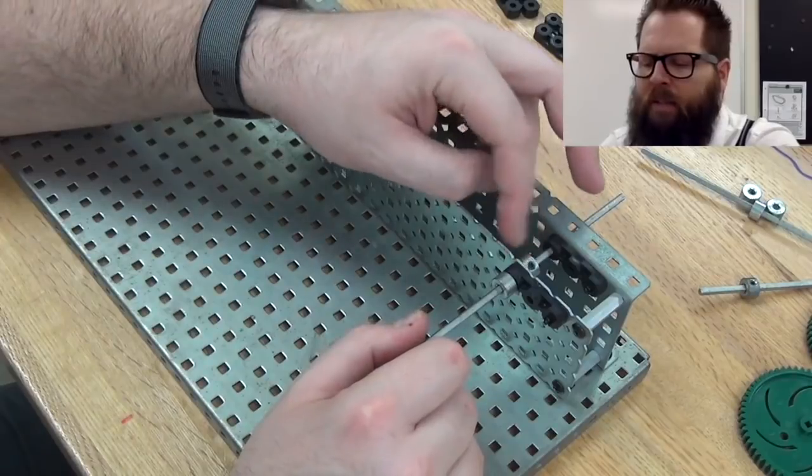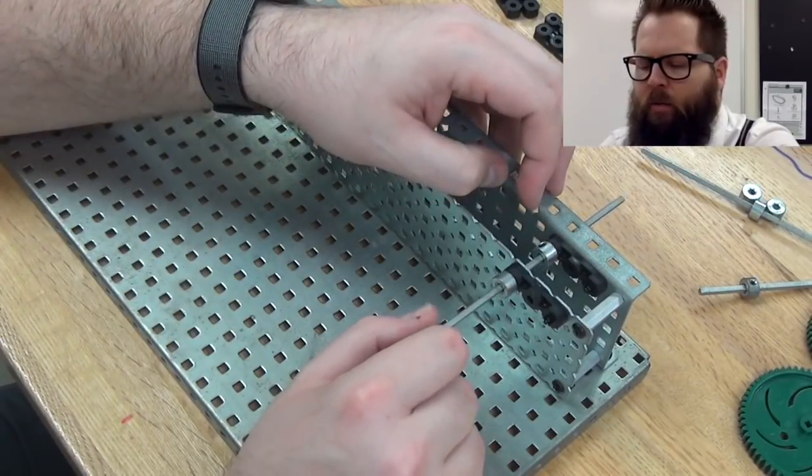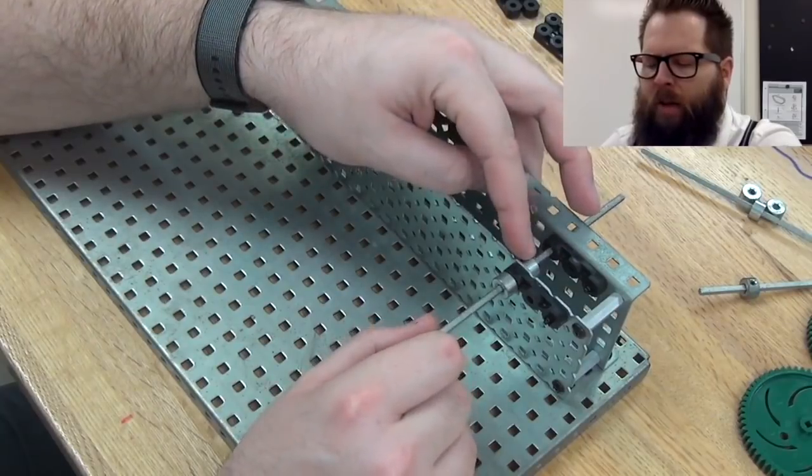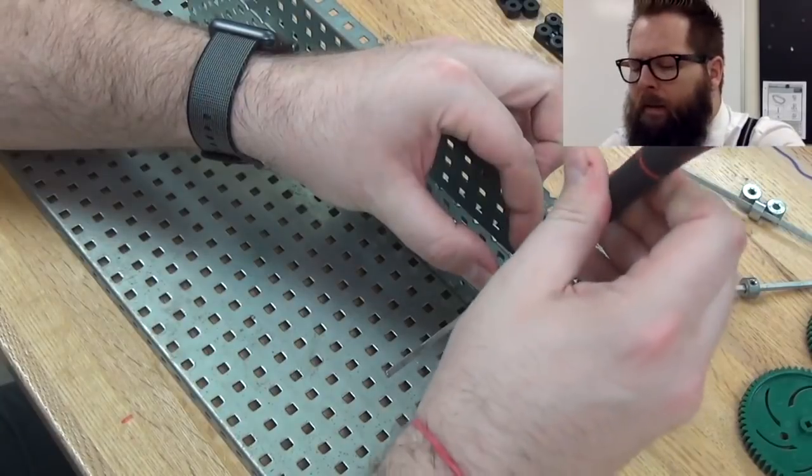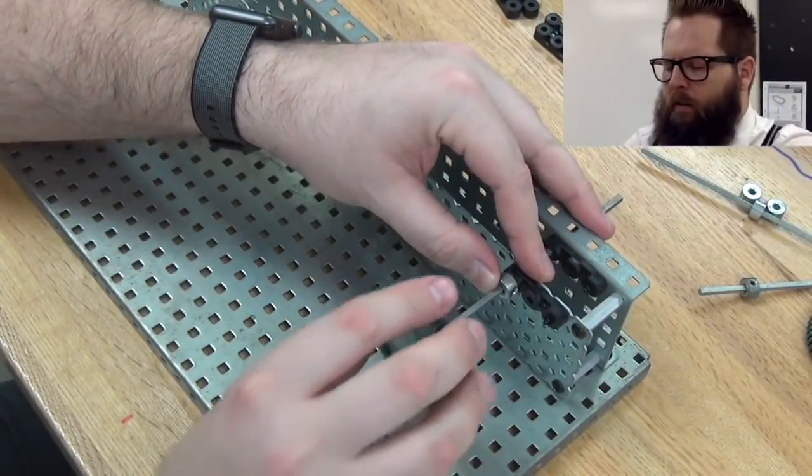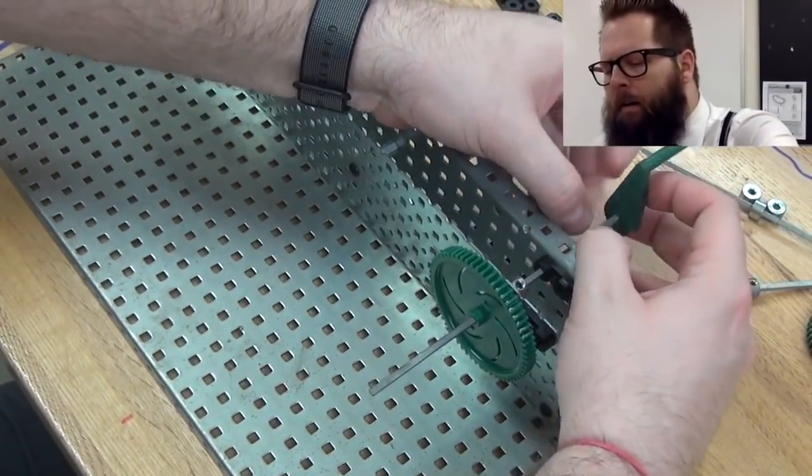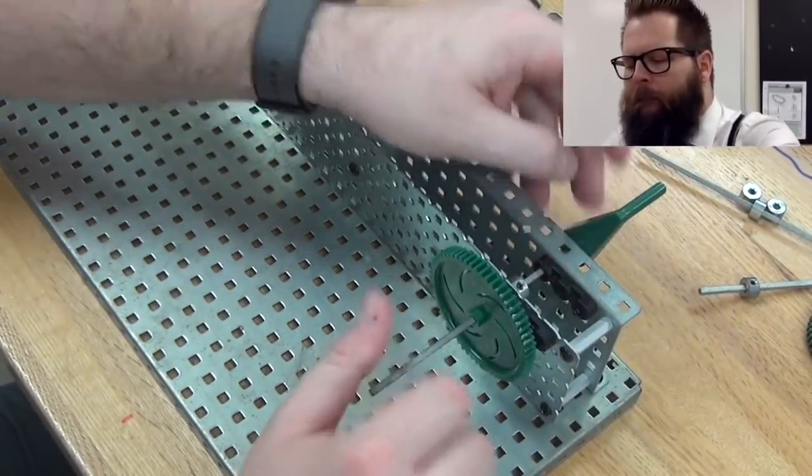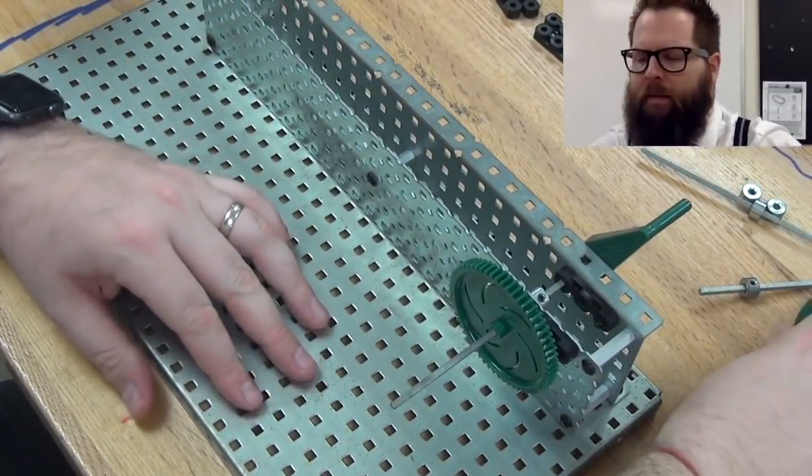Now I want this to stay in place. If I tighten the shaft collar there, this can still move like that. So I want to move this shaft collar all the way to that side and then tighten it. And now I have my input gear. So I have a gear right here and I can put my crank right here. And then there we go. So I have my input gear just like that.